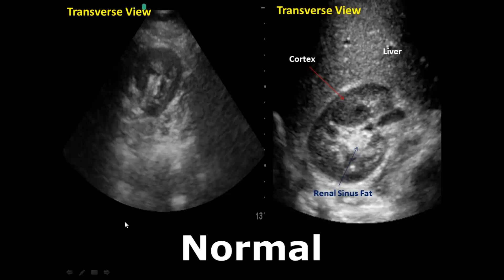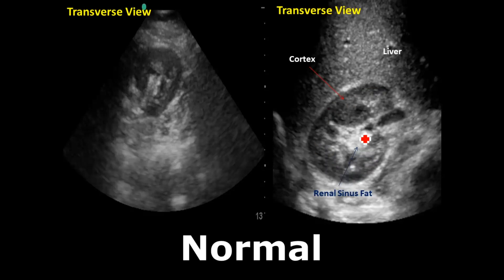The next view is the transverse view. It is a cross-sectional image of the kidney. In this right image we can see it more clearly — we have the cortex and the renal sinus, very well visualized. Above them is the liver. Here we can also see some of the renal pyramids and the renal pelvis.